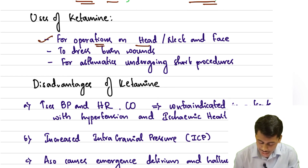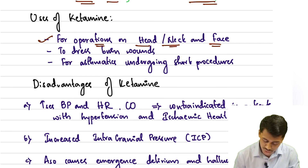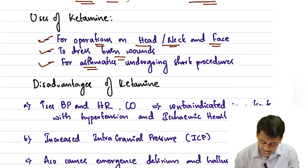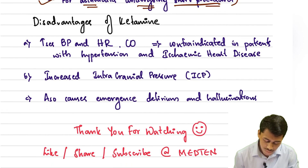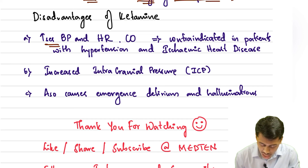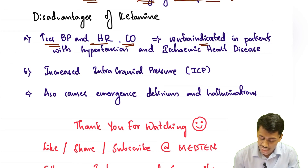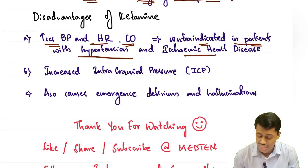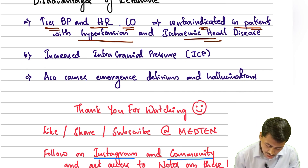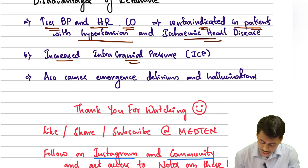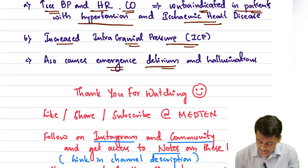Ketamine is used for operations on the head, neck, and face, for dressing burnt wounds, and for short procedures in asthmatic patients. The disadvantages of ketamine are that it increases blood pressure, heart rate, and cardiac output, making it contraindicated in patients with hypertension and ischemic heart disease. It also increases intracranial pressure, and causes emergence delirium as well as hallucinations.